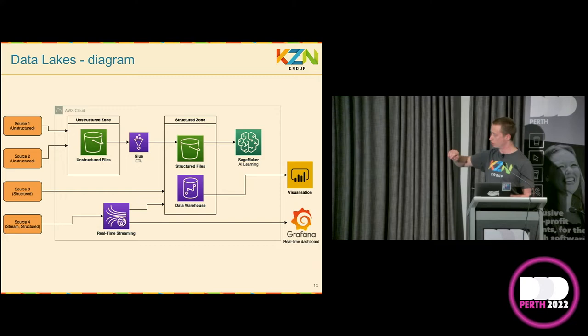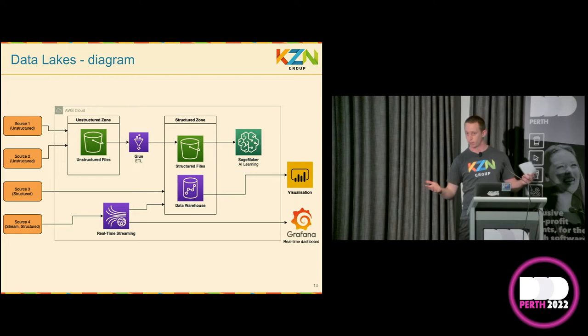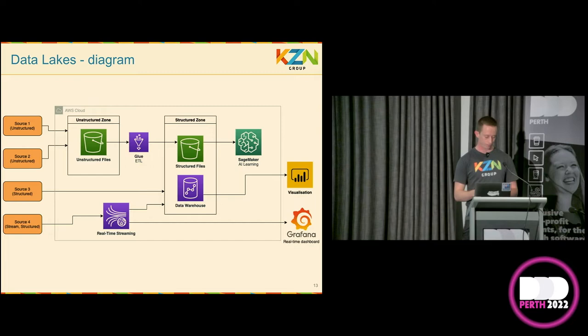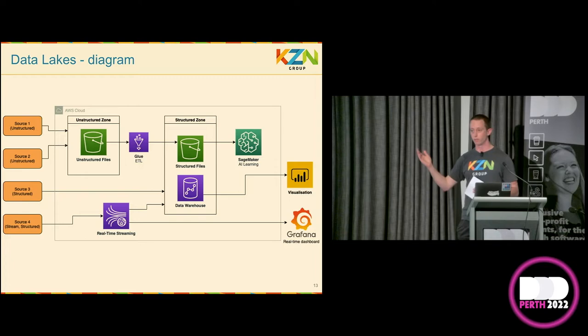Between the two zones, we have a Glue job — that's AWS speak for an ETL, the extract, transform, and load we talked about earlier. This Glue job takes unstructured data and applies metadata to add structure to it and move it into the structured zone. It's worth noting that you can't just throw a random CSV in and expect the metadata to somehow be known — for every source that you ingest from, you need to have the metadata for that data set. Once that data is sitting safe and structured, it can be brought into the structured zone, where I have a data warehouse and an S3 bucket.